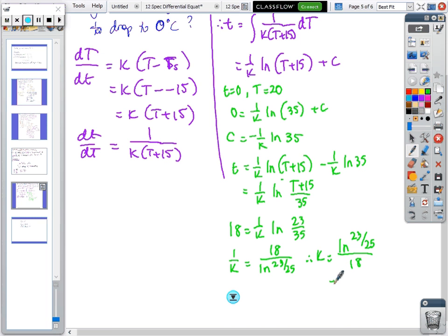When you put that on your calculator, ln(23/35) divided by 18 equals -4.6323 × 10^(-3), which is the same as -0.0046323.